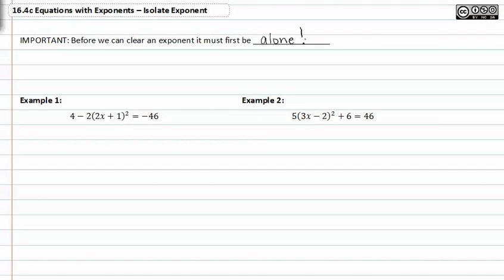So in example one, we have 4 - 2(2x + 1)² = -46.